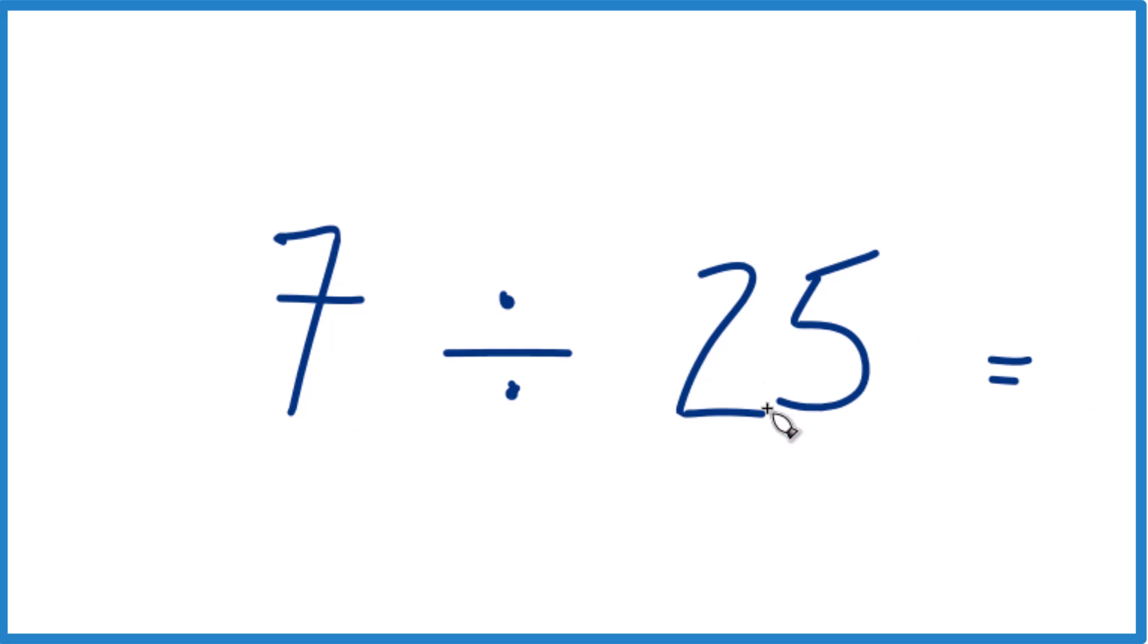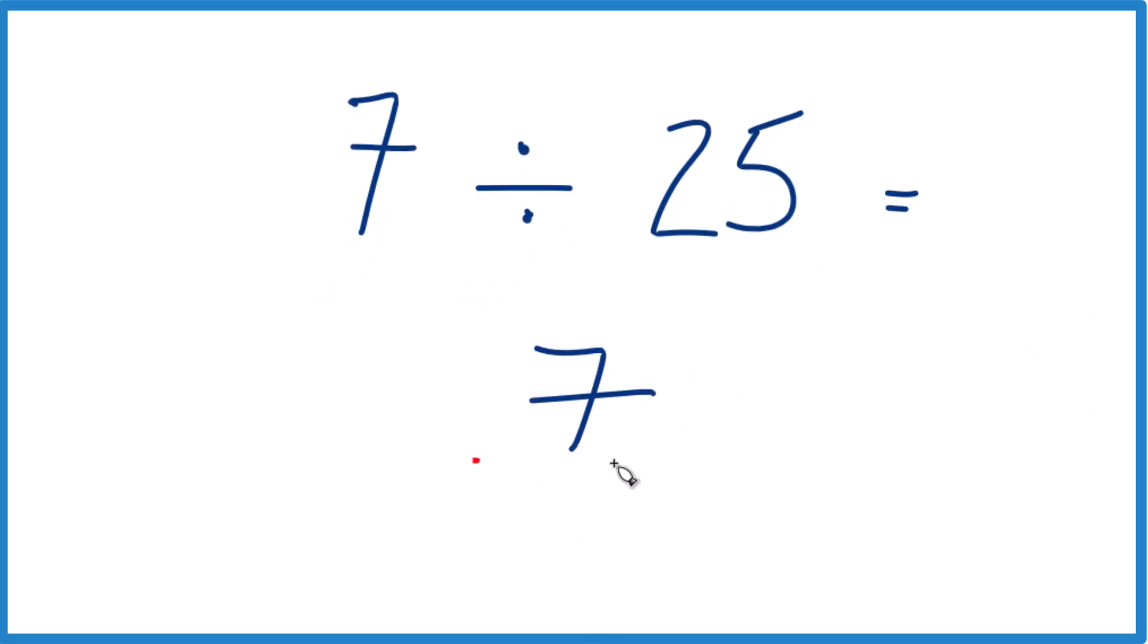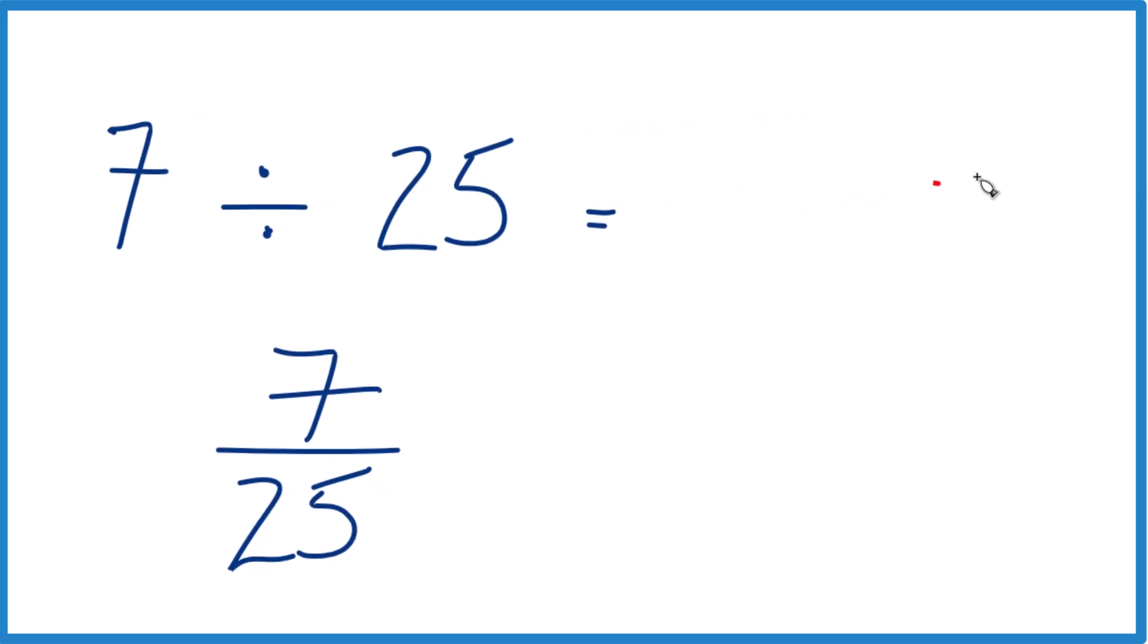So we're saying 7 divided by 25, that's the same as 7 over 25, if you want to think of it as a fraction. So we're seeing how many times 25 goes into 7. So let's write 7 here,